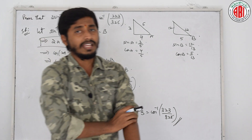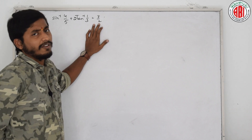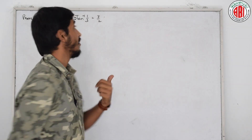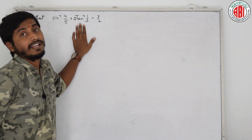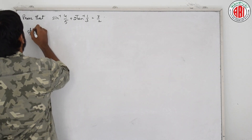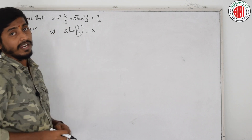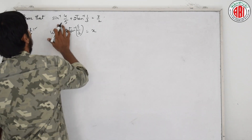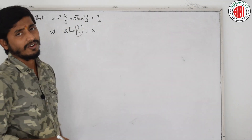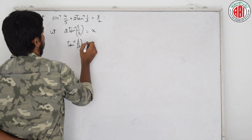Let us look at one more different kind of problem. We know that sin inverse x plus cos inverse x equals pi by 2, and similarly tan inverse x plus cot inverse x, and sec inverse x plus cosec inverse x. Here there is a 2 tan inverse 1 by 3 term and a sin inverse term, so let us try to convert 2 tan inverse 1 by 3 into cos inverse form. Let us assume 2 tan inverse 1 by 3 equals x, so tan inverse 1 by 3 equals x by 2, meaning tan of x by 2 equals 1 by 3.